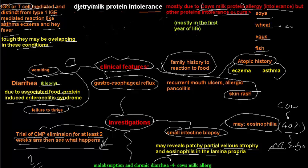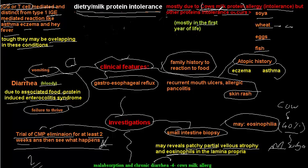This video is about dietary milk protein intolerance, also called cow's milk protein allergy. It is an intestinal allergy to proteins present in cow's milk, like casein. Other proteins can also cause allergy, not only cow's milk proteins — soya protein, wheat (as in celiac disease), eggs, and fish can also lead to allergic reactions.